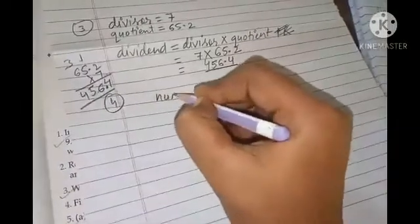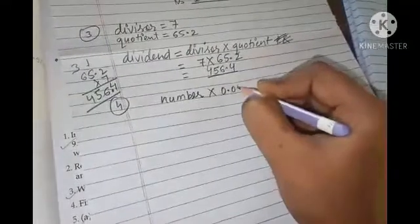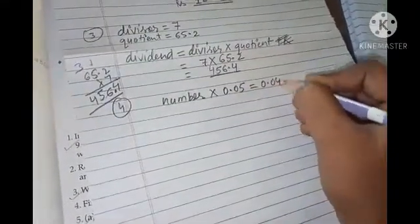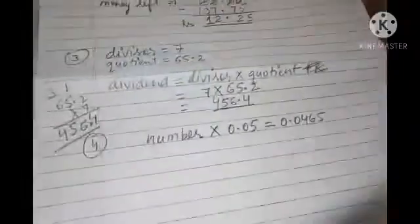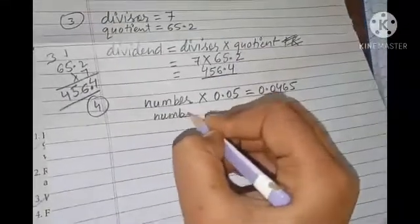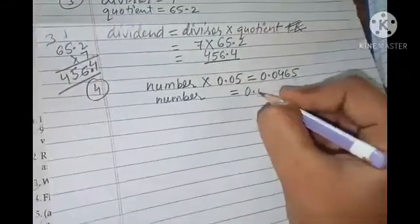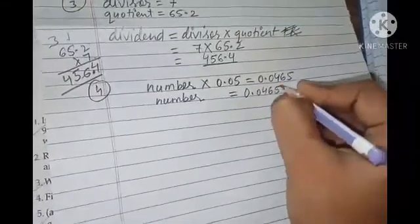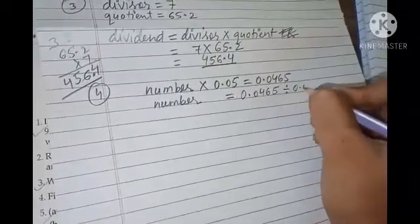Isko karne ke kaafi tarike hain — register mein jo likha hai wo bhi bilkul correct hai, main aapko different tarika yahan pe samjhati hoon. Aapko bola hai: ek number jiska product — product yaani multiplication — 0.05 ke saath kitna aata hai: 0.0465. Aapko ek number diya gaya hai, uska product 0.05 ke saath mein 0.0465 hai. You have to find out this number. Jab aapko yeh number find out karna hai, to isko equals to ke right-hand side mein pahunchana hai. The operation will change — division mein convert ho jaega by 0.05.